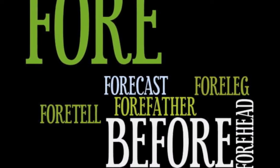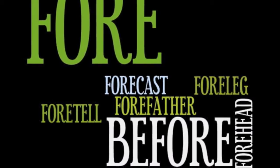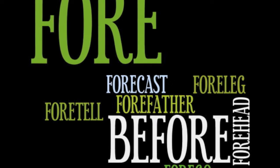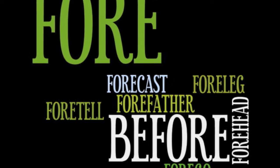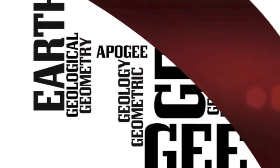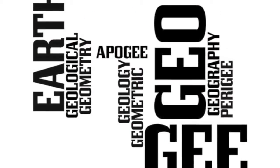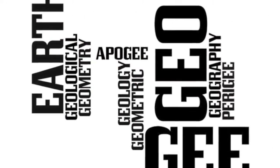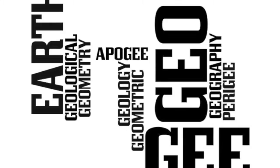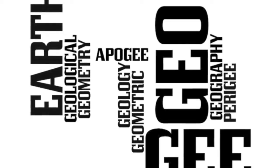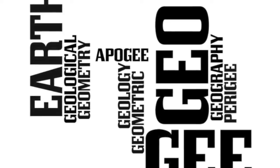Fore means before, as in foretell, forecast, forefather, foreleg, or forehead. And then we have geo, or ge, which means the earth, such as in geometry, apogee, perigee, geology, and geometric.